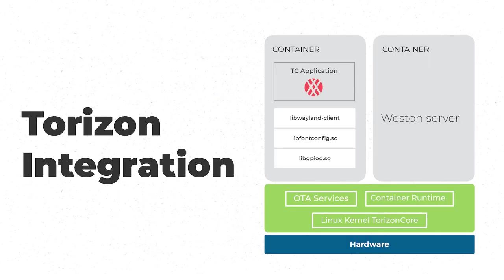Talking about our integration with Torizon: it's a Yocto-based project that provides a Docker environment, making it possible to run containerized applications, with features like over-the-air updates. To run a TotalCross application, it's super easy — we just need a container with some libraries like libgpiod, libwayland, and libfontconfig, and another container running a Weston server, which is a Wayland compositor. We're going to release a Toradex container to make it even easier to deliver apps for Toradex.